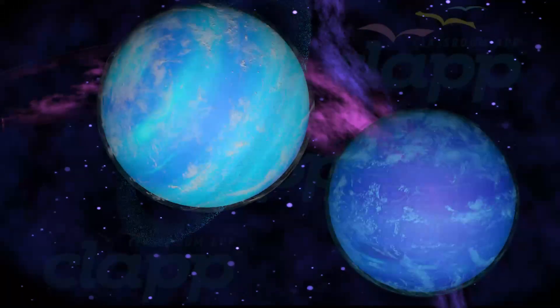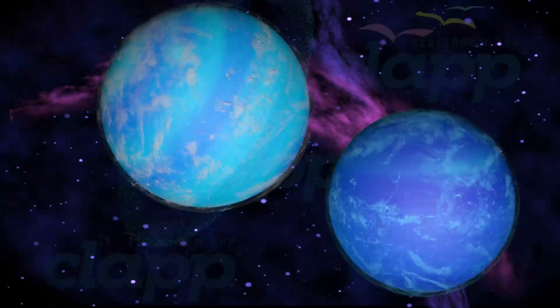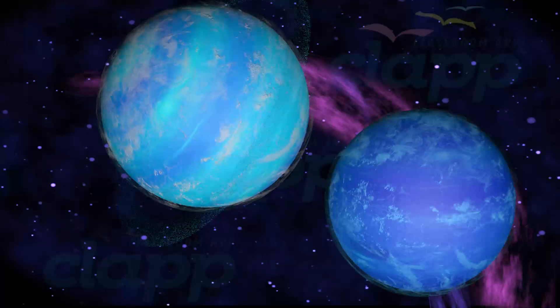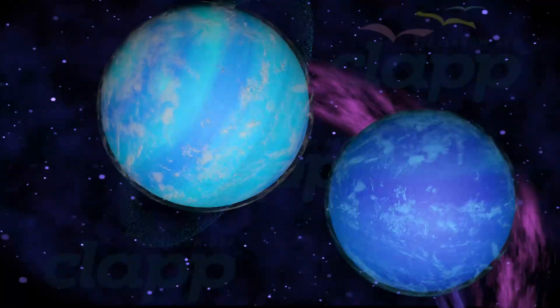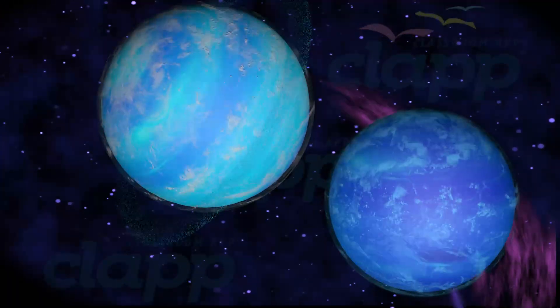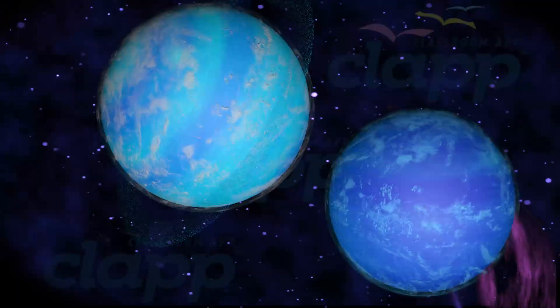An ice giant is a giant planet composed mainly of elements heavier than hydrogen and helium, such as oxygen, carbon, nitrogen, and sulfur. There are two ice giants in the solar system: Uranus and Neptune.